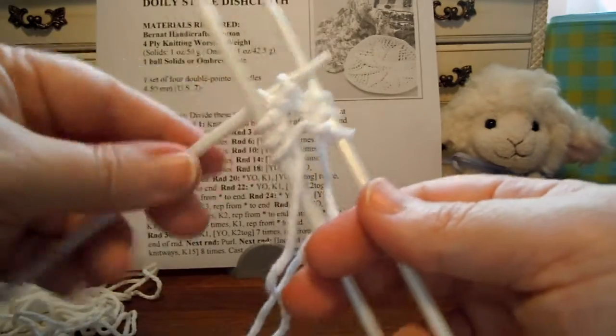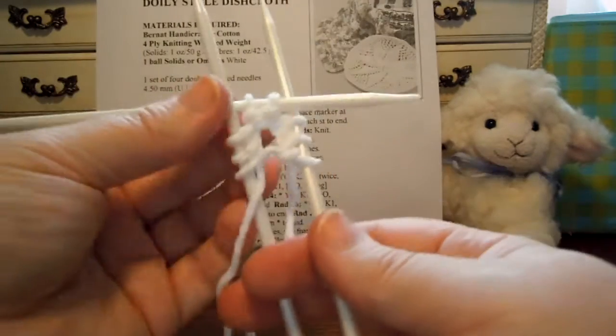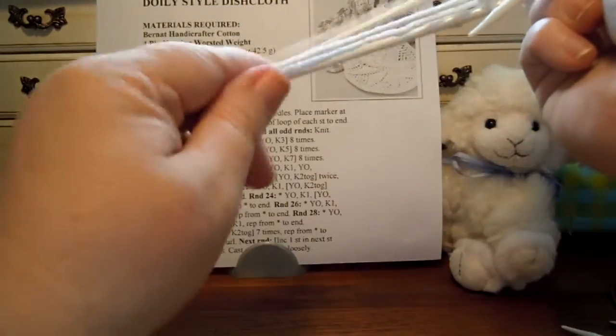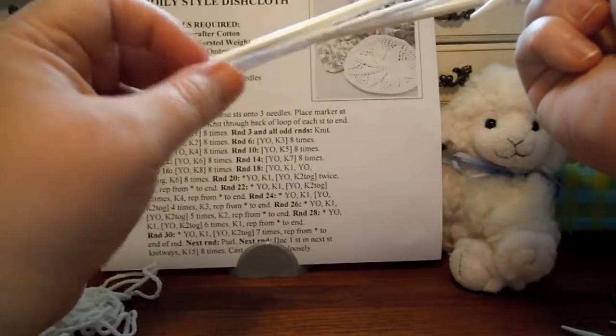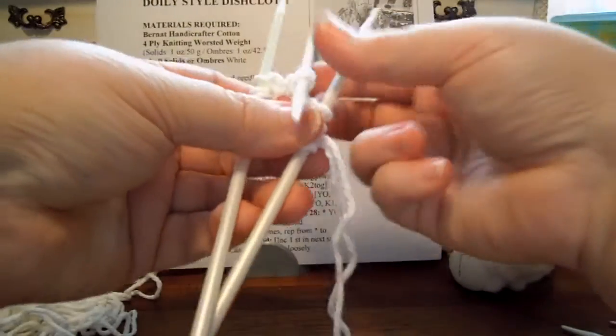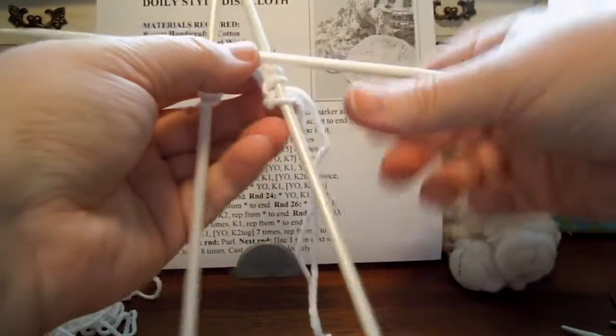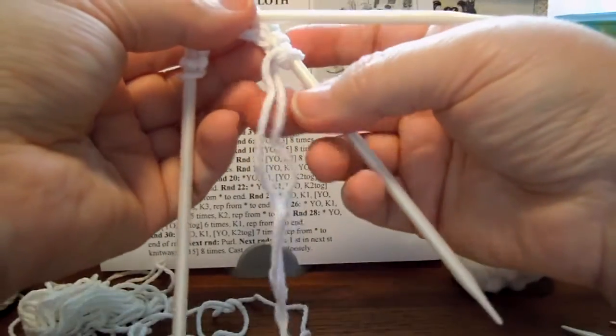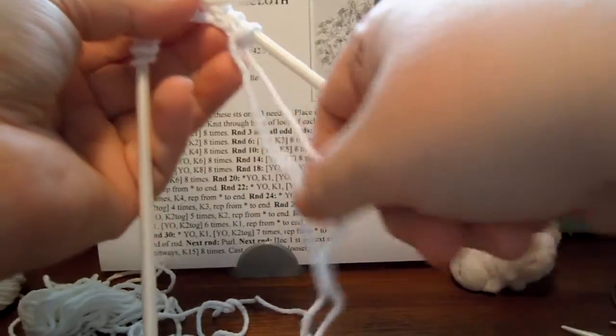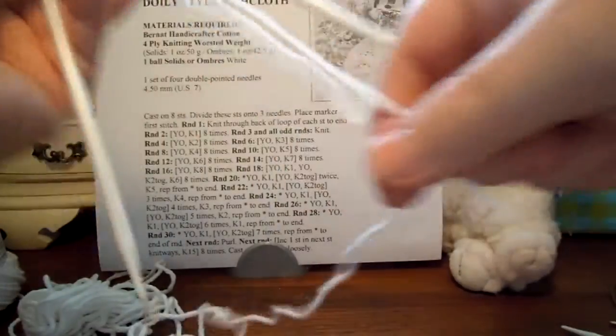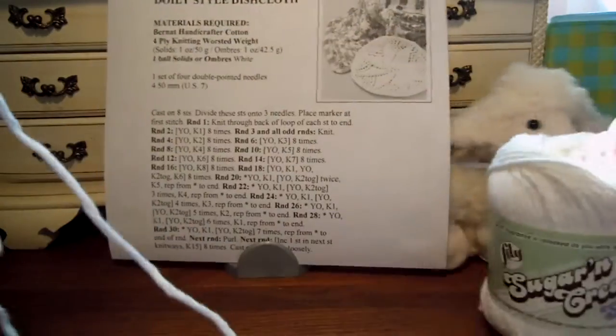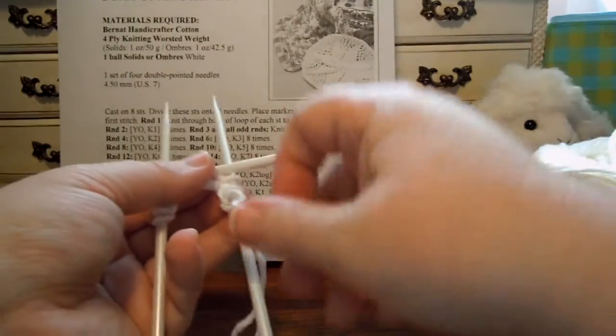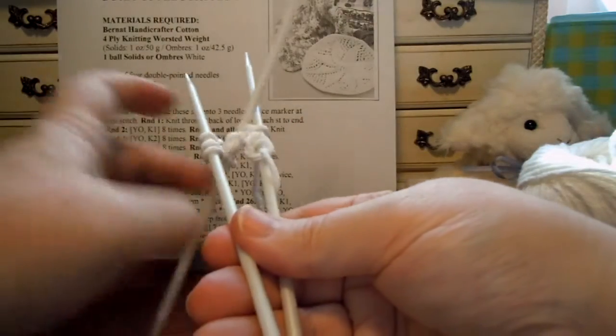And now it's time to join it in the round. So to join it in the round you get the yarn coming down in the middle like that, and just hold all these. And you get the, what is on the right side, that should be what's coming from the ball. So I'll move my yarn over here. It doesn't tell you in the pattern that you should join in the round, but you need to join in the round here.